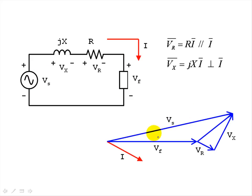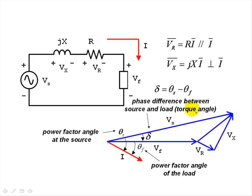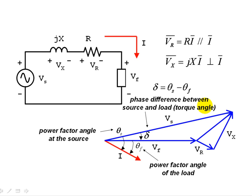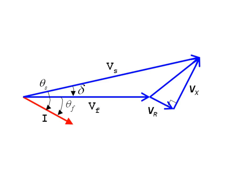Let's identify the angles in this geometrical construct. First, our old friend theta F, the power factor angle of the load. Next, the power factor angle of the source, theta S. And a new one, little delta — their difference, also known as the torque angle delta. The first thing we notice about the little triangle is that it is a right triangle — we call it the cable triangle.